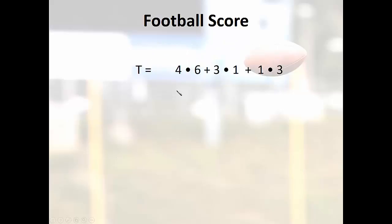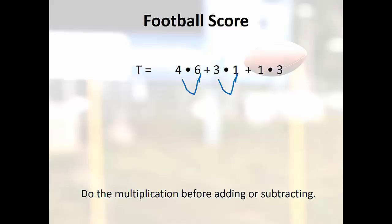So our shortcut here is deciding we don't need parentheses. We will do the multiplication before adding or subtracting. So it's going to be 24 plus 3 plus 3, and then we can put that together. And our final score is 30.